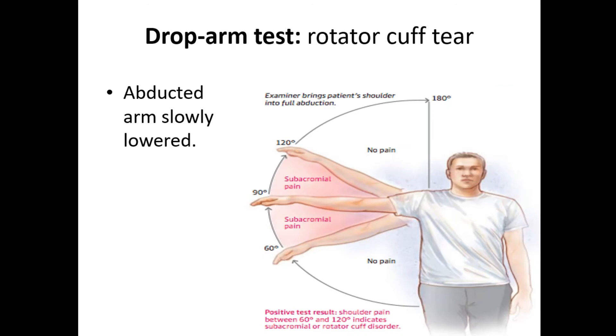Drop arm test: This test is used to identify a rotator cuff tear. The patient abducts the arm and then slowly lowers it. Due to weakness of the rotator cuff muscles, the patient is unable to control the lowering movement.